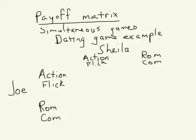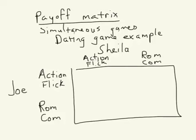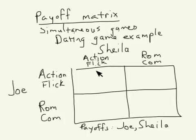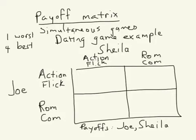Now let's get to the payoffs. We draw a grid — a payoff matrix. My payoffs are listed Joe, then Sheila: two numbers in each cell representing the payoff to Joe comma payoff to Sheila. I'll use a convention of 1, 2, 3, 4 for the payoffs: one is worst, four is best. If they're both at the action flick, the payoff to Joe is 3, the payoff to Sheila is 4. Dating games are ones where players would rather be together than apart, so they both have relatively high payoffs. Sheila likes action flicks; Joe prefers the rom-com.